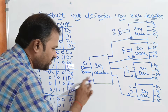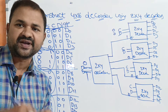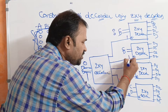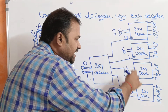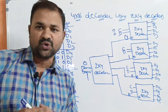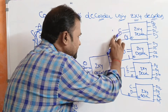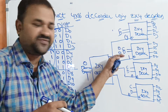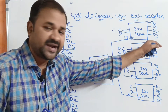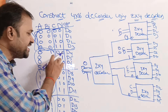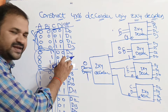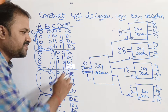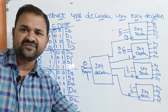Now let us check the second combination where A and B are 0, 1. The second output line will be enabled, meaning this E value is 1 while the remaining 3 E values are 0. With C and D: if CD is 0,0 then the first output line of the second decoder gives D4; CD 0,1 gives D5; 1,0 gives D6; 1,1 gives D7. Likewise, it will produce the correct output.